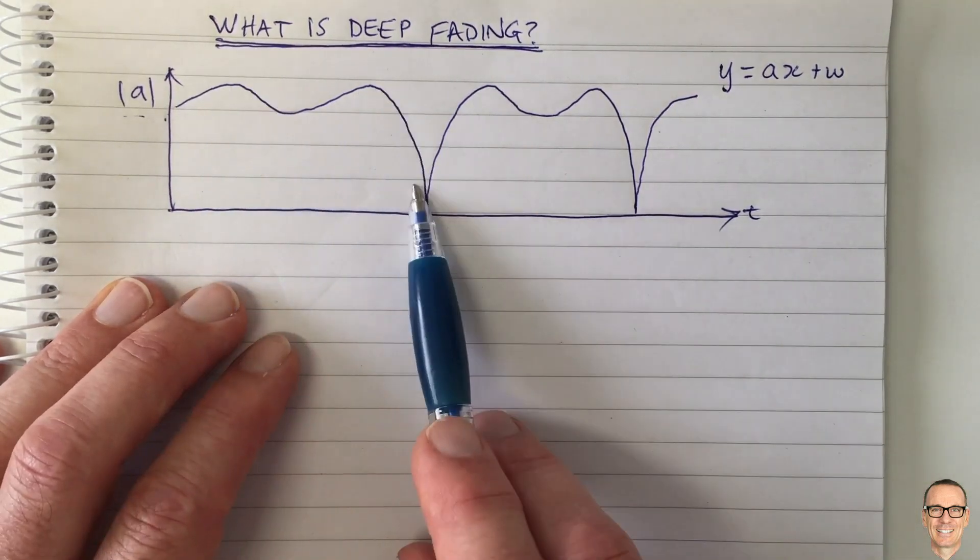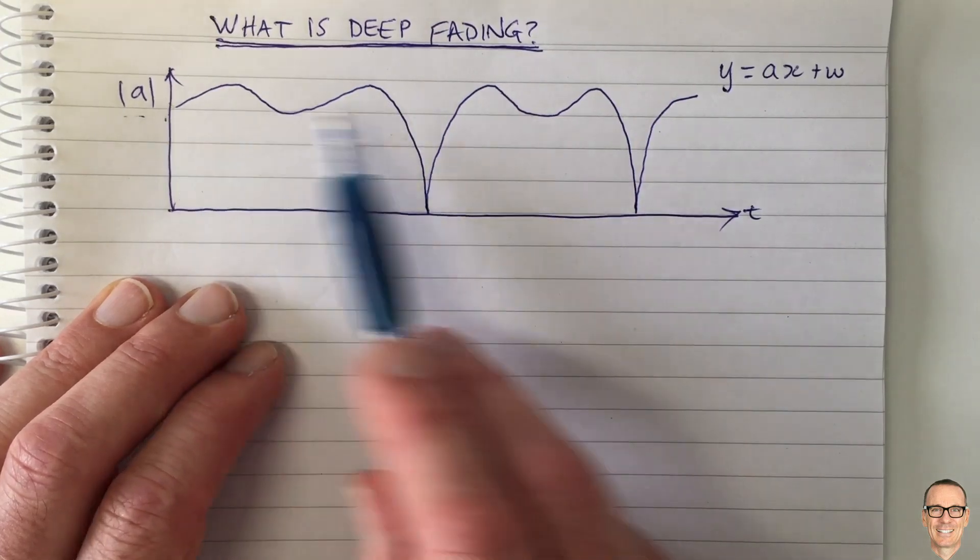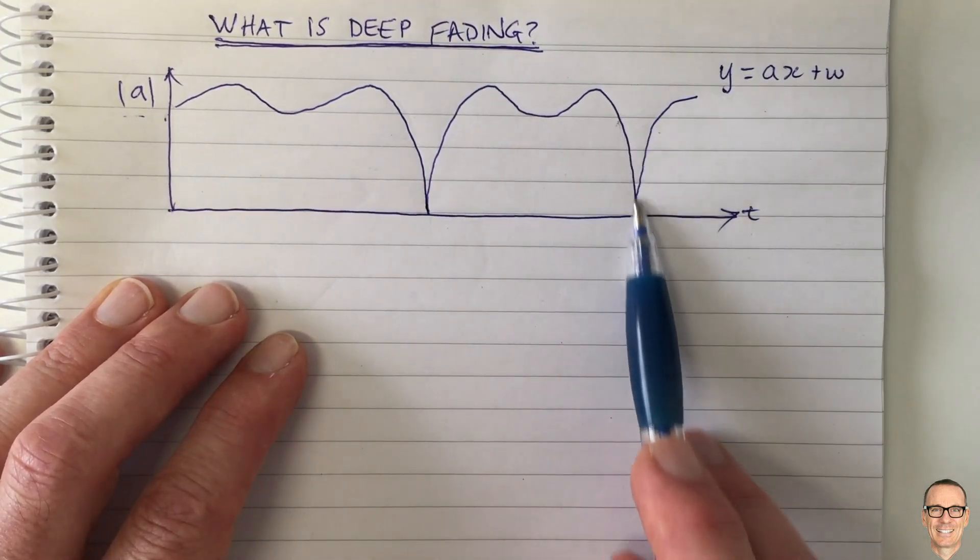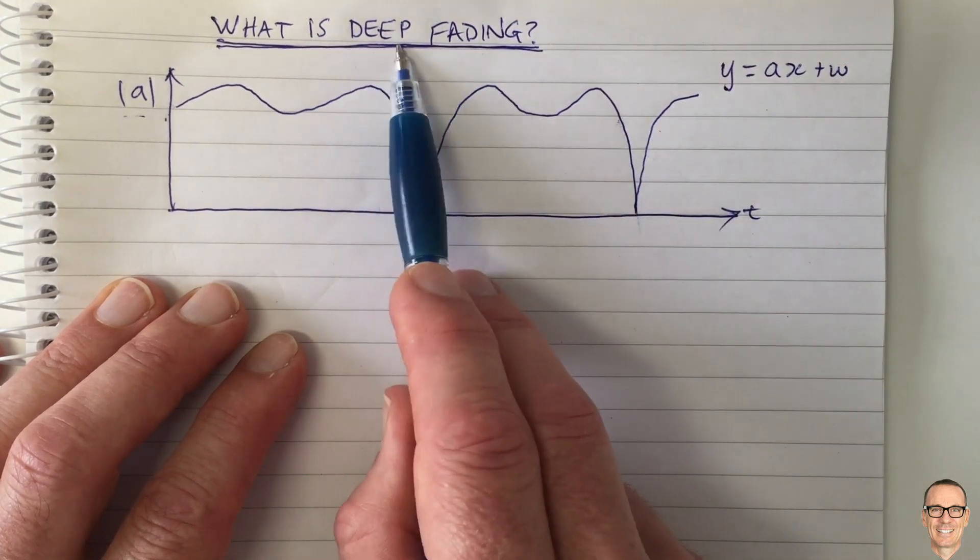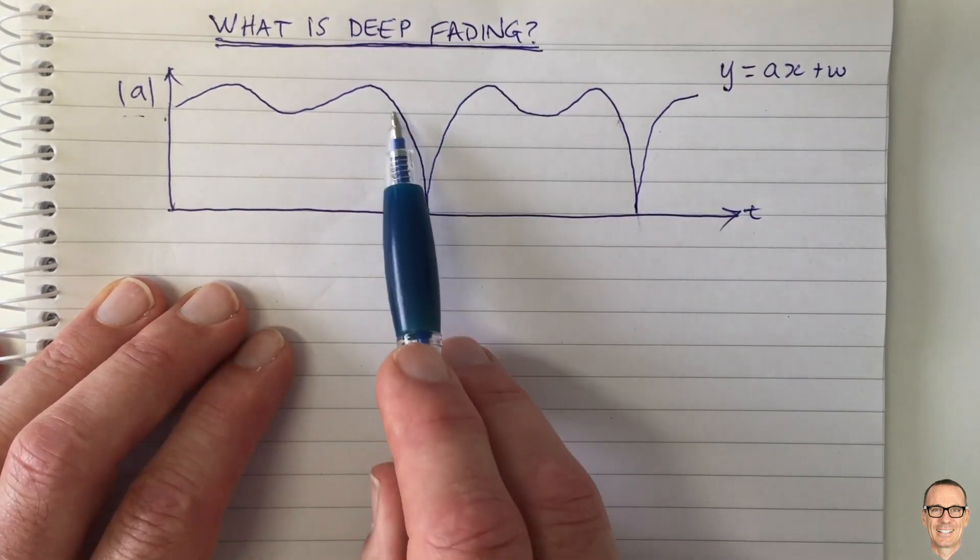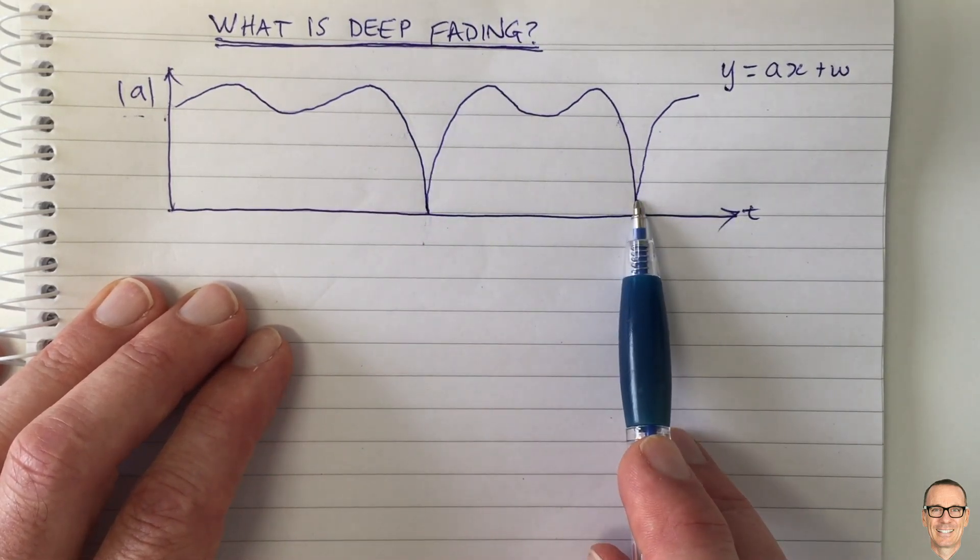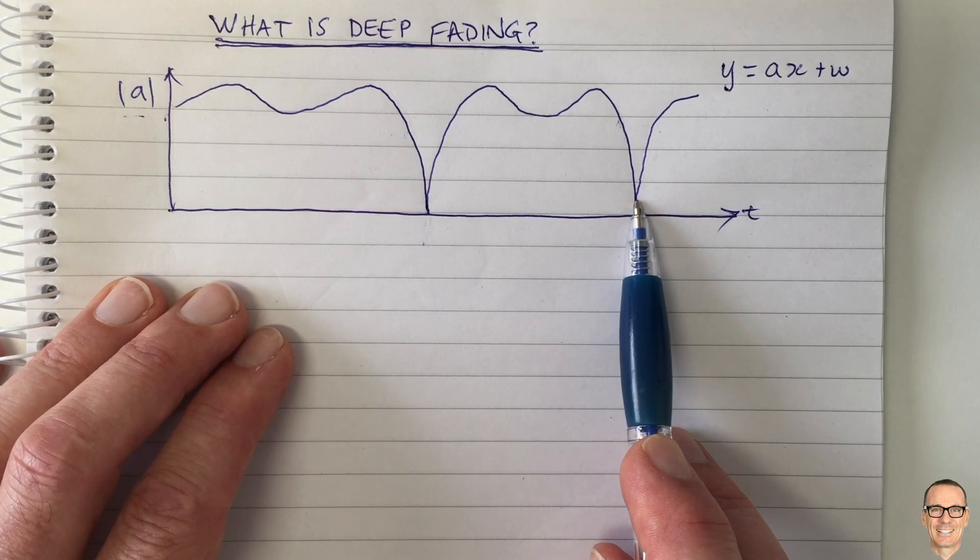So here's what we're often shown, and we think to ourselves, well this channel gain looks like it suddenly goes very low at certain times. And this is what typically is called deep fading. So the question is, why does it suddenly go so sharply, so low, so sharply? And that's often a question.